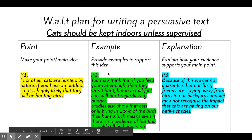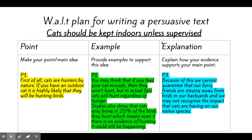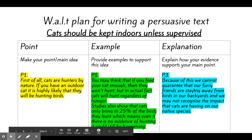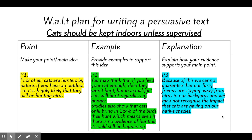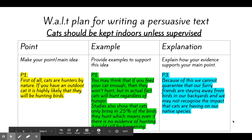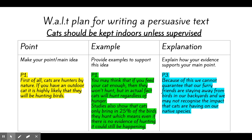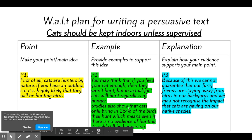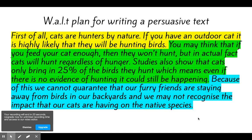Then you need to explain how your examples relate back to your point. For example: 'Because of this, we cannot guarantee that our furry friends are staying away from the birds in our backyards, and we may not recognize the impact that cats are having on our native species.' It's really clear all the way through and leaves your reader with a really good understanding of what you are doing. Here's the paragraph in full form — this is what I want you to do today.